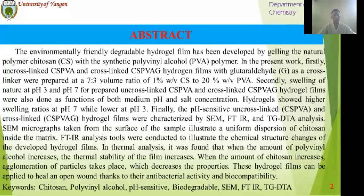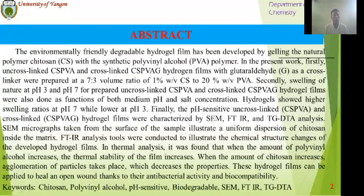Firstly, I will talk about my abstract. The environmentally friendly degradable chitosan has been developed by blending the natural polymer chitosan with the synthetic polyphenate alcohol PVA. The crosslinked CFPVA and crosslinked CFPVA dehydrogen with glutathione acid crosslinking would be prepared as a 7:3 volume ratio of 1% chitosan solution to 20% PVA solution. We have also done a fraction of both medium-based and salt concentration.